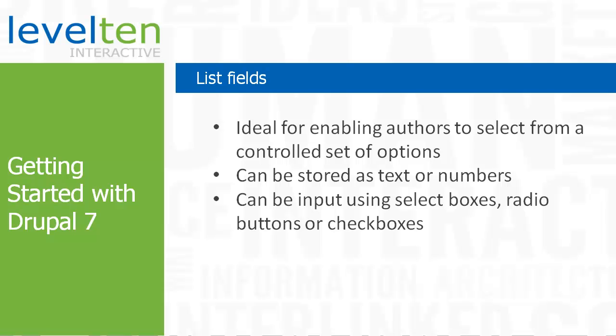In the tutorial Adding Fields, we saw how we can attach text fields to content types for people to add data. But there are times where you want more control than a free-form text field or text area box. You might want to limit the author's selection to a fixed set of options. This is where a list field comes in handy. In this tutorial, we'll take a look at how list fields work and some of the unique options that they provide.